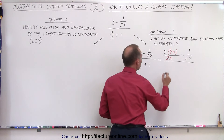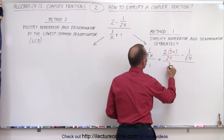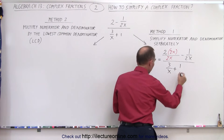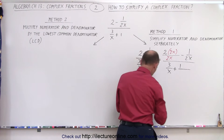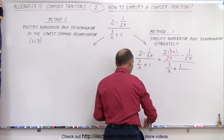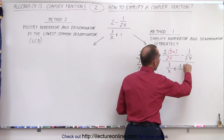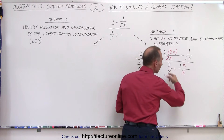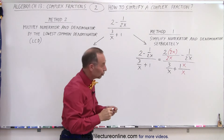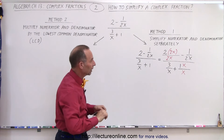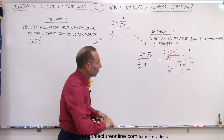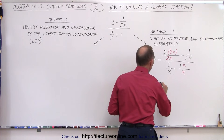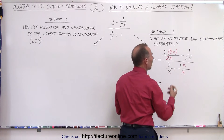In the denominator, we're going to do the same thing: 3 divided by x, plus 1. We're going to multiply the numerator and denominator by x. So now in the denominator we also have two common denominators, and we can add the numerators together in both the numerator and the denominator.